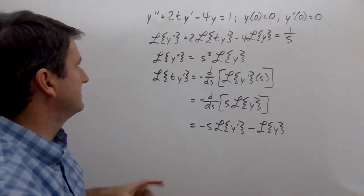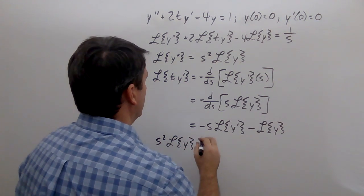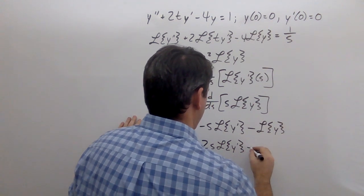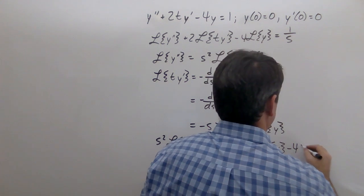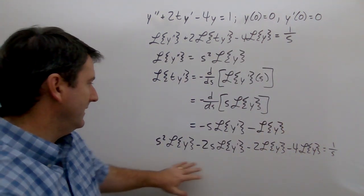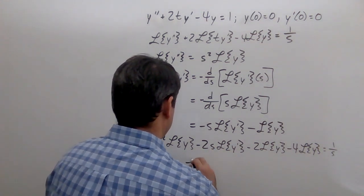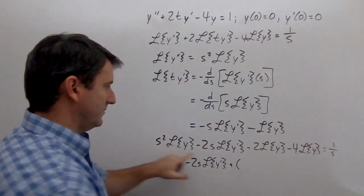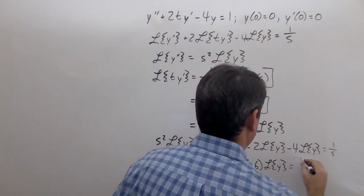Now we can plug everything in. This gives us s squared times L{y}, minus 2s times L{y}', minus 2 times L{y}, minus 4 times L{y}, equals 1 over s. Combining the L{y} terms, we get negative 2s times L{y}' plus (s squared minus 6) times L{y} equals 1 over s.